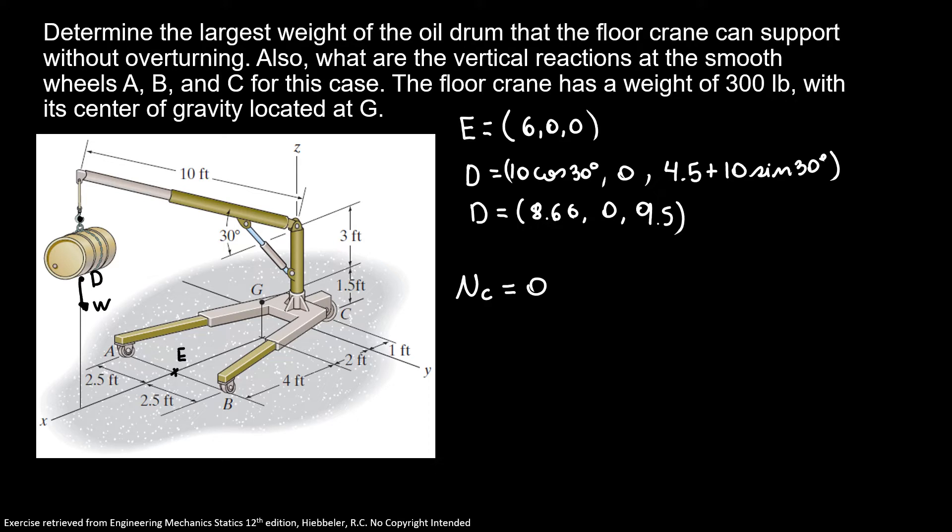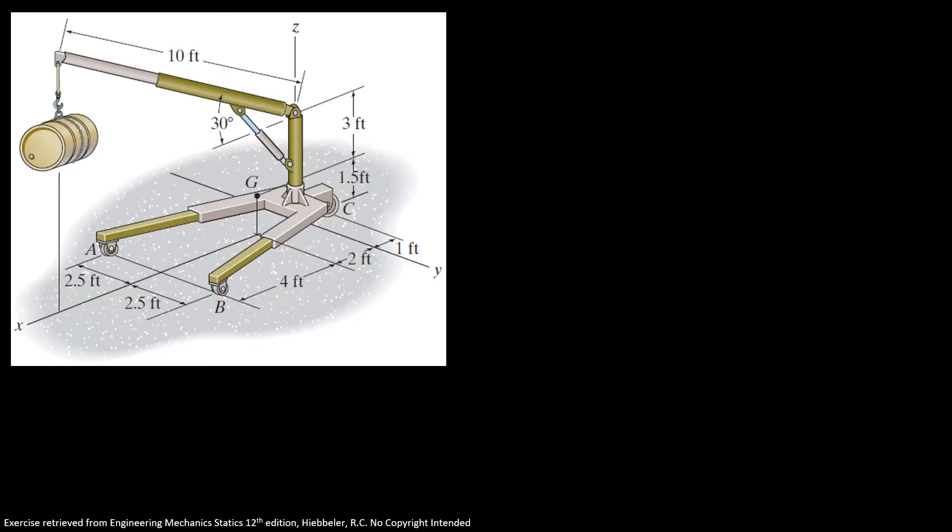Now, we're going to find the distance between our points A, B, G and D to our point E. First, we're going to find our distance AE, that is equal to (0, -2.5, 0). To find our distance BE is equal to (0, 2.5, 0).